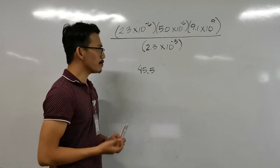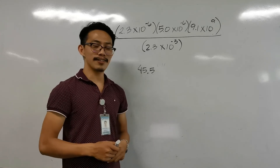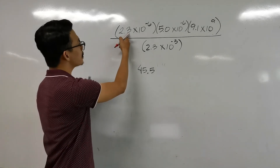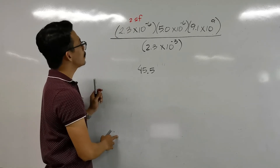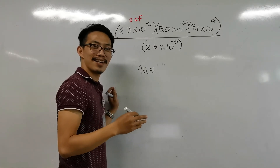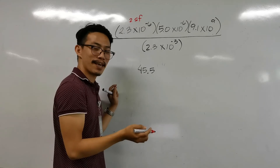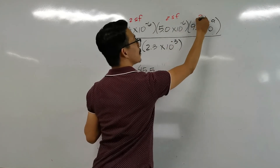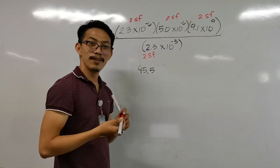Now, what will be our final answer? Since this is multiplication and division, we count the number of significant figures in each given. Do not be confused by the powers of 10 — focus only on the coefficients when counting significant figures. 2.3 has 2 significant figures, 5.0 has 2 significant figures, 9.91 has 3 significant figures, and 2.35 has 3 significant figures. The least number of significant figures is 2, so our answer must have only 2 significant figures — counting 1, 2.